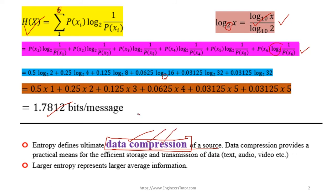So we know in information theory we need to compress the data. So for data compression we calculate the entropy of the source. Data compression provides a practical means for efficient storage and transmission of information. So why we do the data compression: for efficient storage and data compression. Larger entropy represents larger average information.